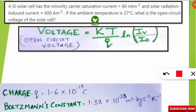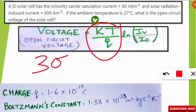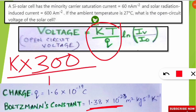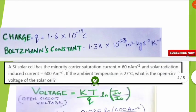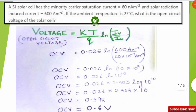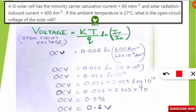Now we solve the first part: KT/q. That means K (Boltzmann's constant: 1.38 × 10⁻²³) multiplied by T (300 Kelvin), divided by q (1.6 × 10⁻¹⁹ Coulombs). After calculating this, you get 0.026. Remember this value — KT/q = 0.026.